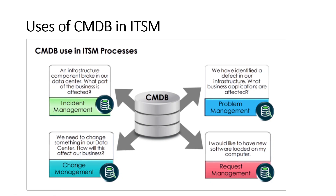For problem management — whenever the same incident repeats or a particular service keeps getting affected, a root cause analysis and permanent solution is needed. You can see that when a defect is identified in infrastructure, the affected business applications can also be stored in the CMDB via the problem form's CI field. Same goes for change management: if you need to add server space or change a hard drive in a data center, you raise a change in IT, and the CMDB field helps determine how it affects the business. For request management, if you need new software loaded on your computer, the service or software details can be referenced in the CMDB field.